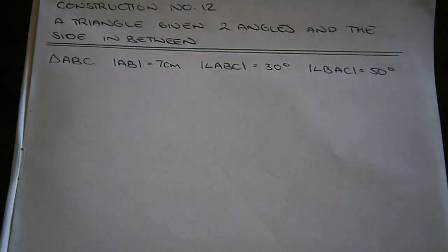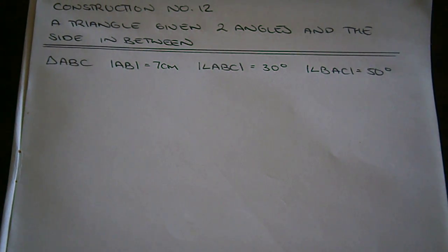Construction number 12: to construct a triangle given two angles and the side in between.